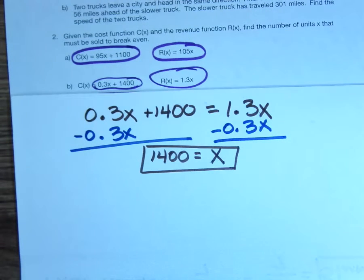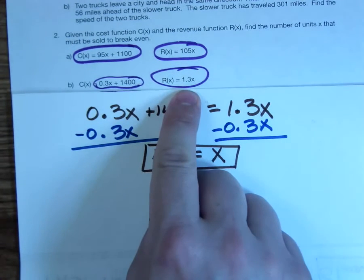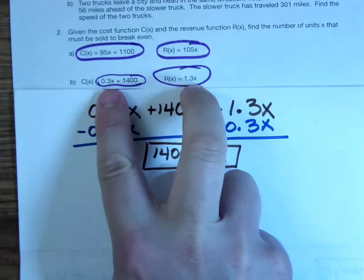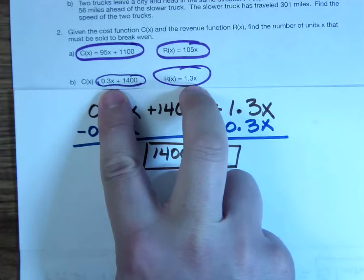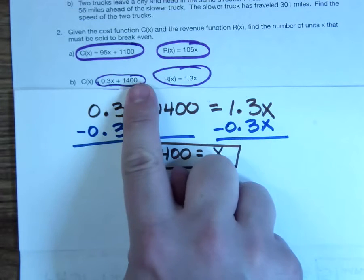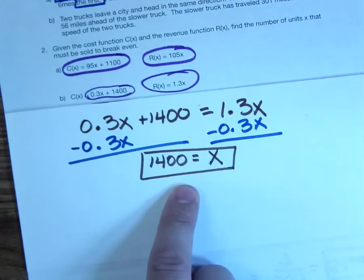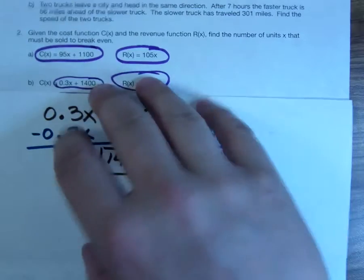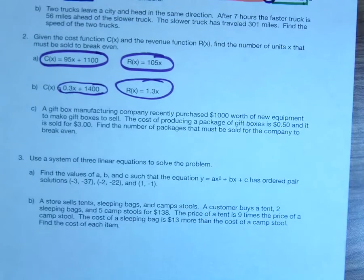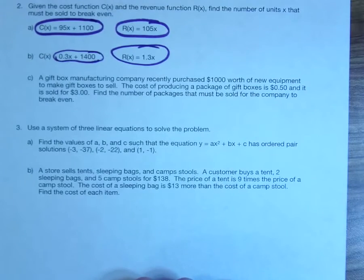How many widgets do you have to sell? I got to sell 1,400 of them. Now, when you step back and think about it, of course the answer is 1,400. I was selling them for $1.30, they cost 30 cents, so I was making a dollar on each one. If I make a dollar on each one, how many do I have to sell before I get my $1,400 I spent on the machine back? 1,400 of them. It makes sense when you step back and look at it.